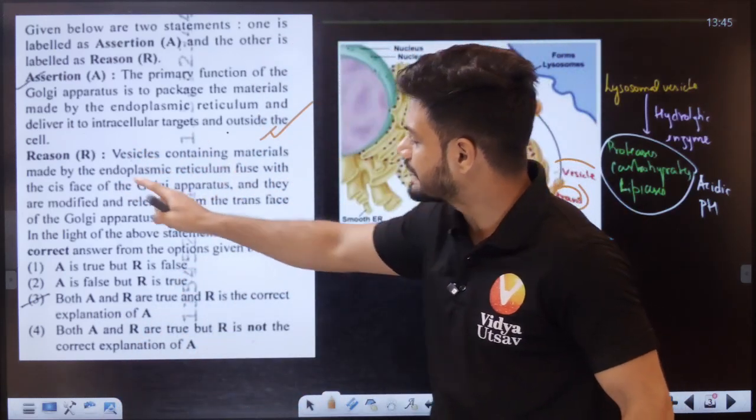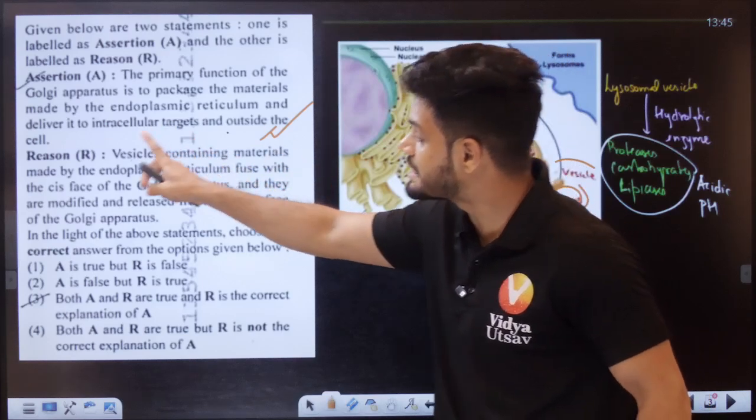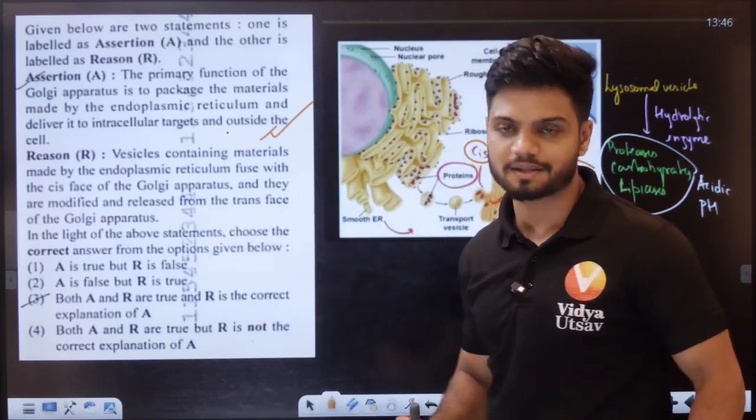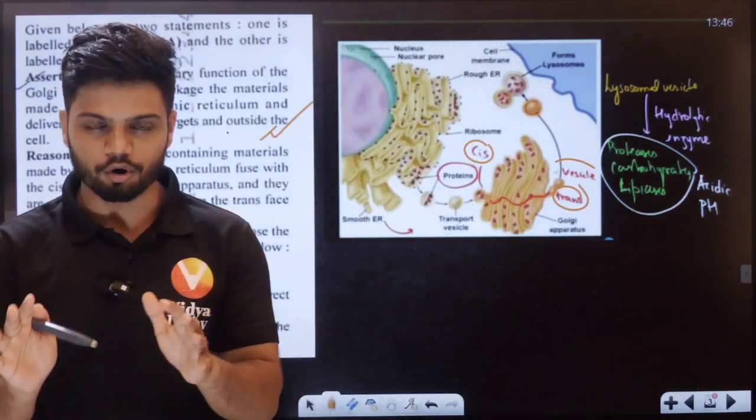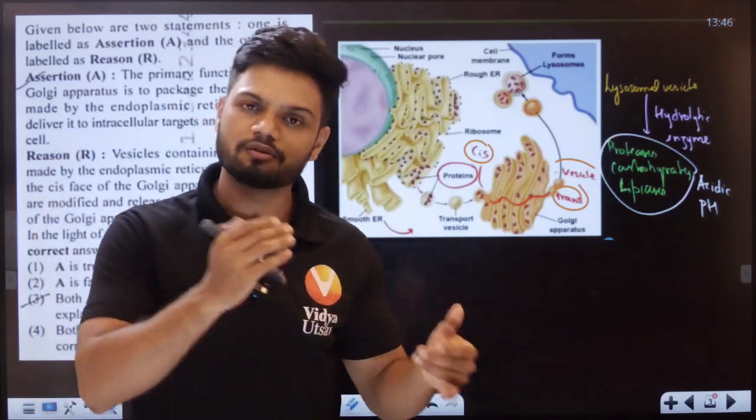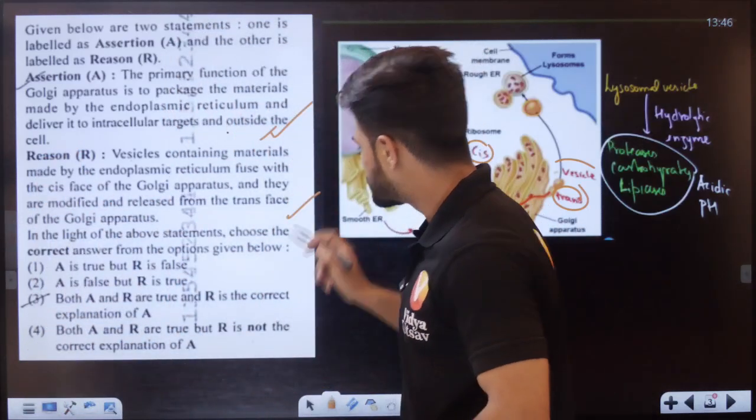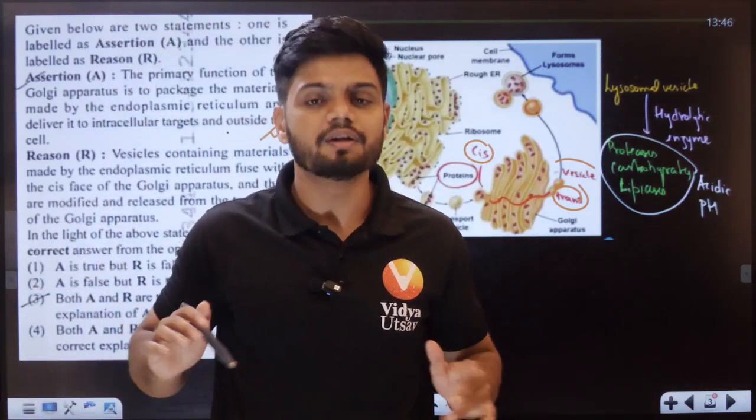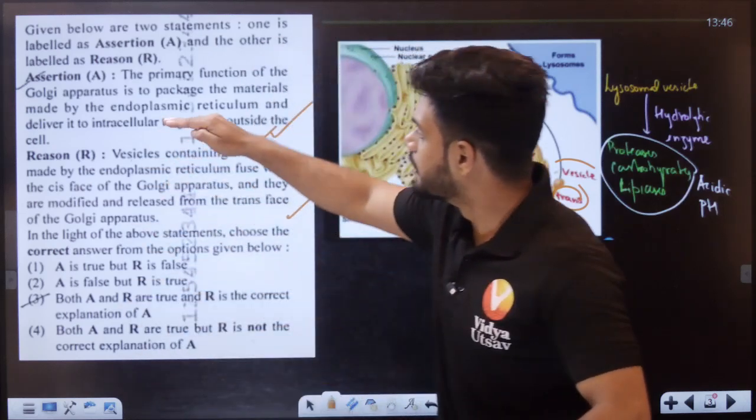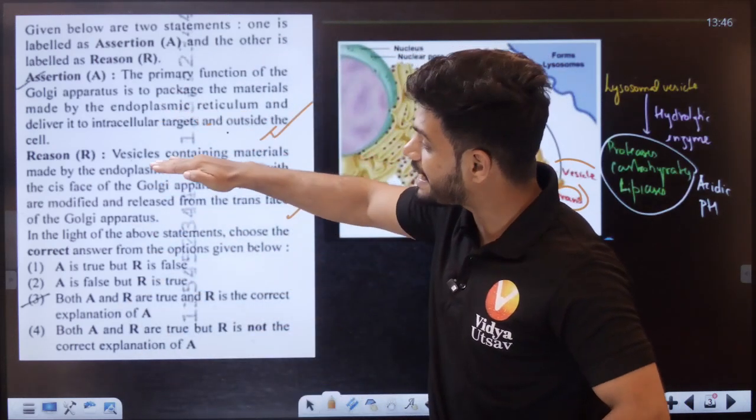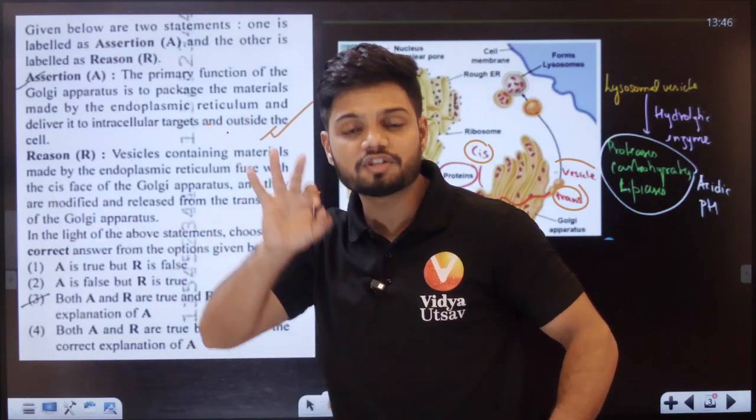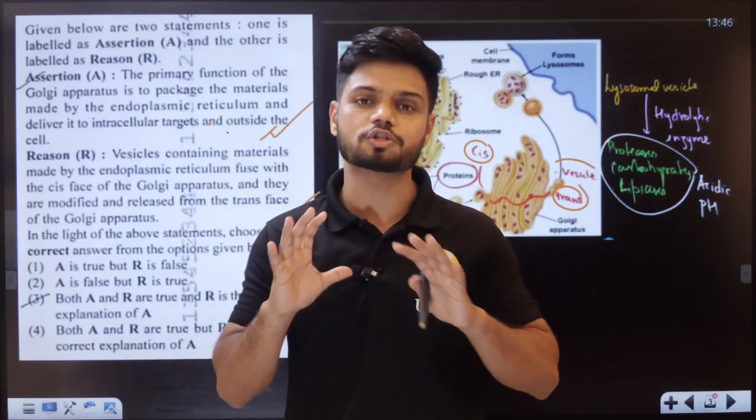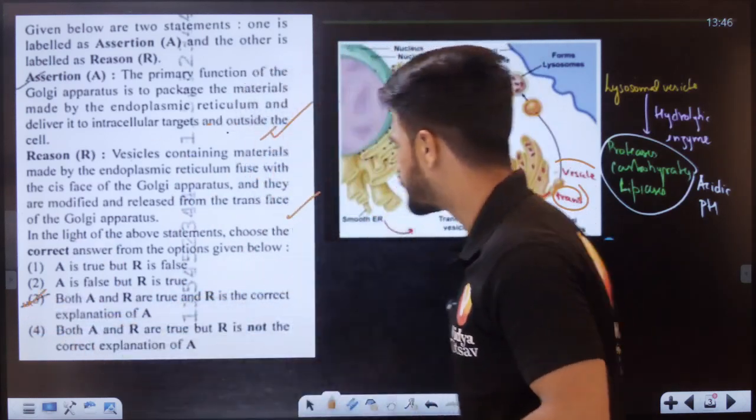Reason: Vesicles containing material made by the endoplasmic reticulum fuse with the cis phase of the Golgi apparatus and they are modified and released from the trans phase of the Golgi apparatus. It's like a packaging material. Golgi body is your Amazon factory where packaging happens. Both the statements are correct here. The main issue is it explaining the assertion. Here it is talking about the packaging here. Here it is explaining how the packaging is happening. This is a fairly easy question. There should be no confusion here, students.